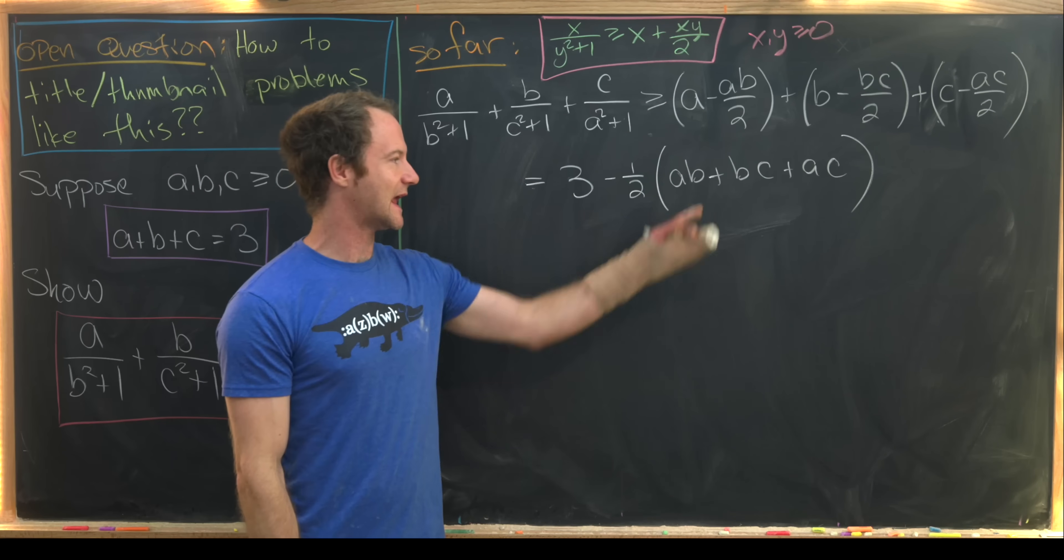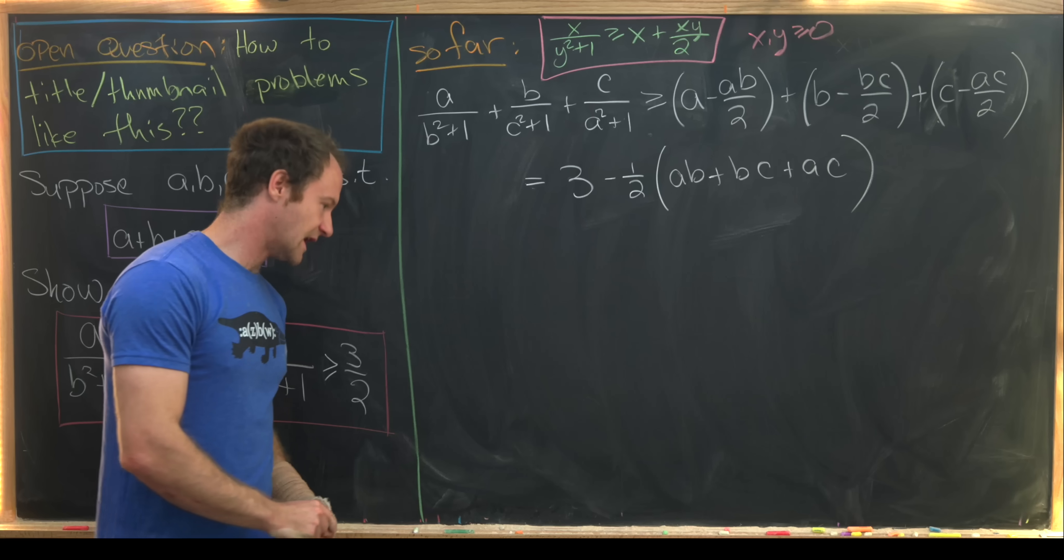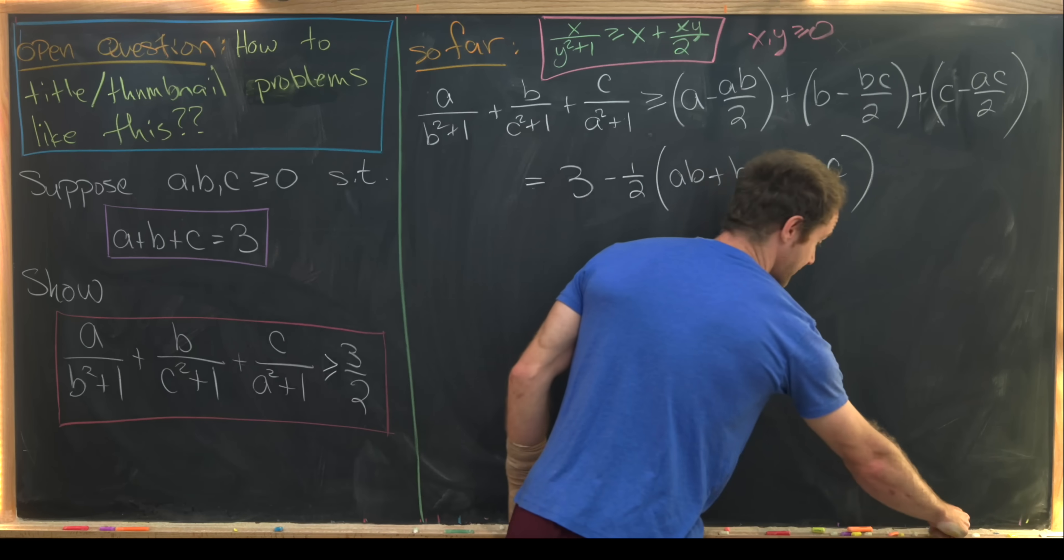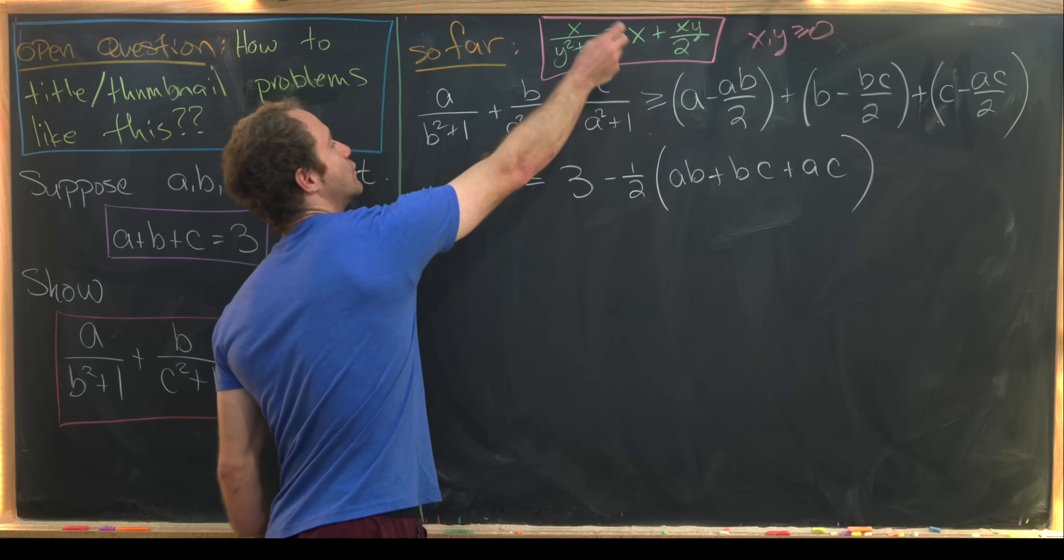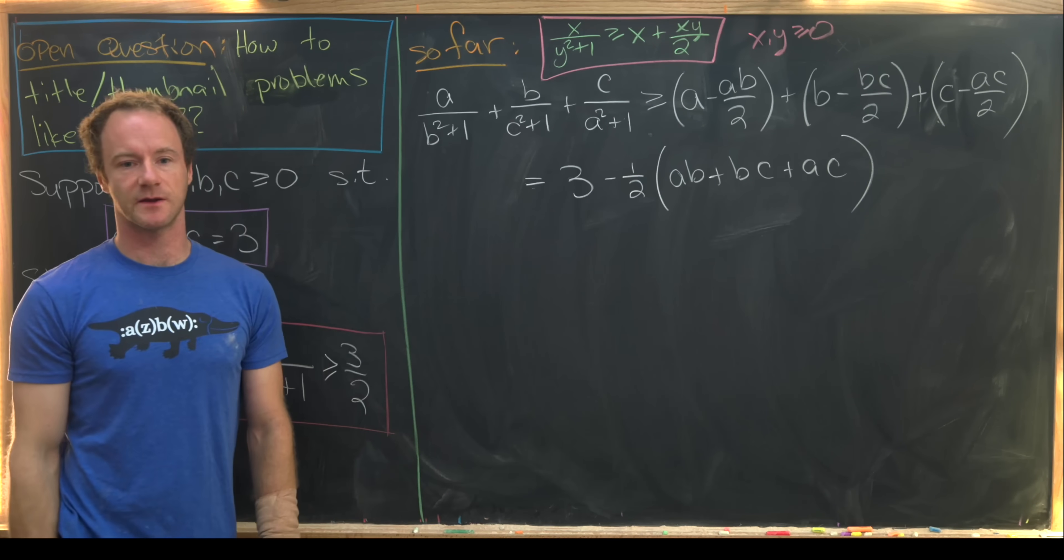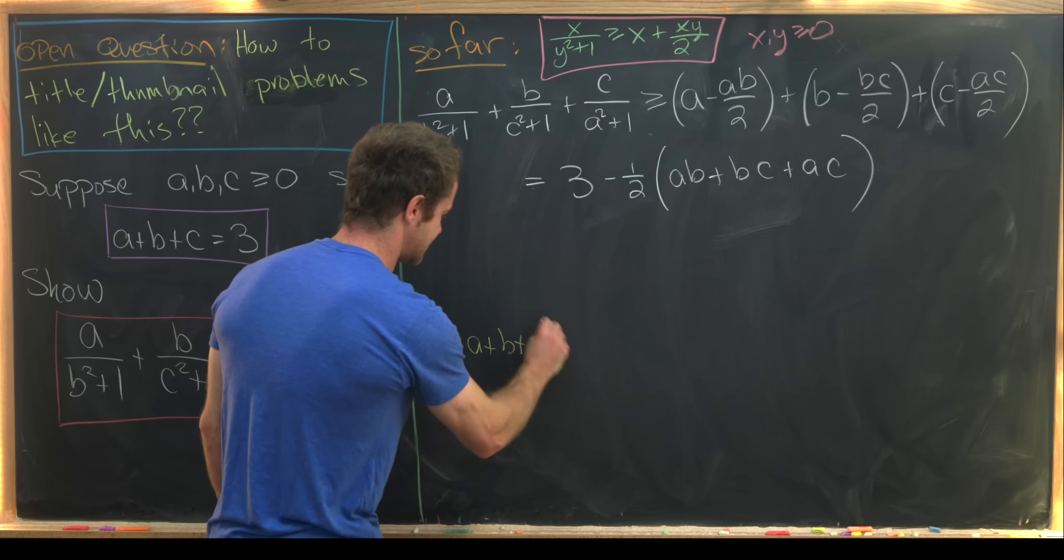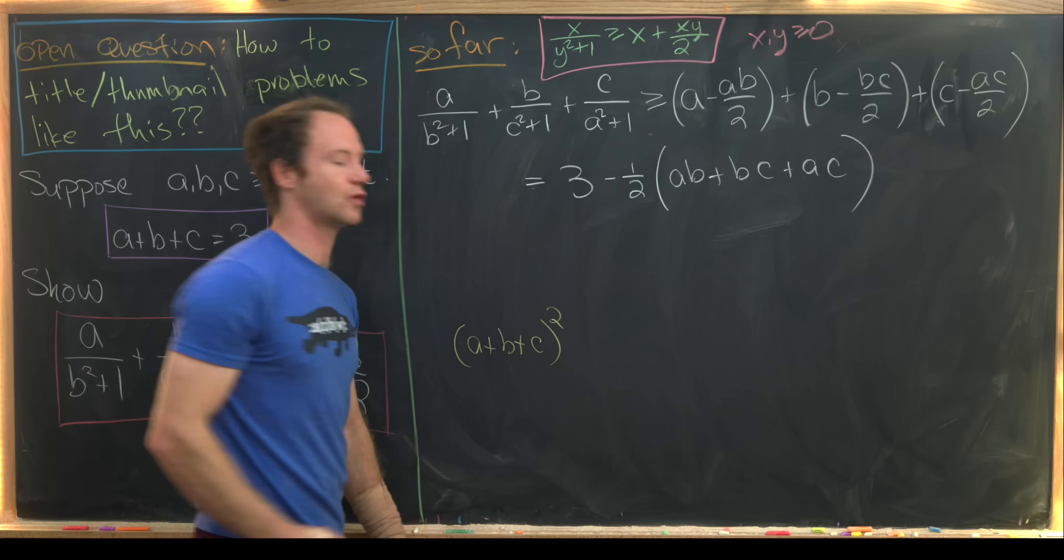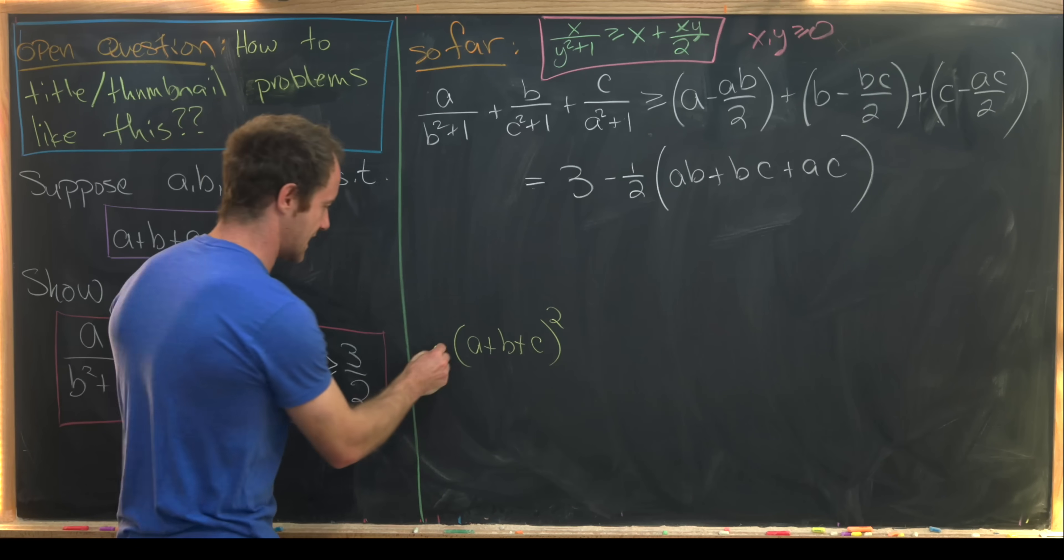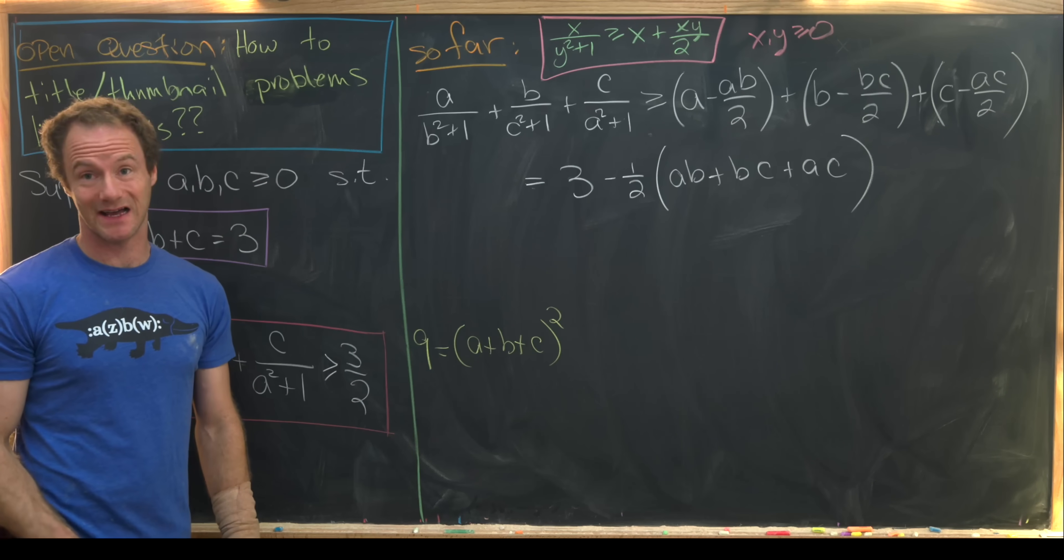And that's going to involve a trick pretty similar to what we used when proving this inequality. And so let's start with a plus b plus c quantity squared. So on the one hand, that's equal to 3 squared, which is 9.